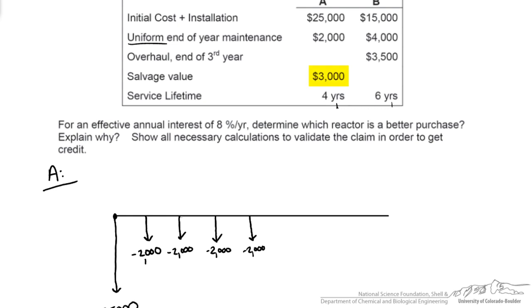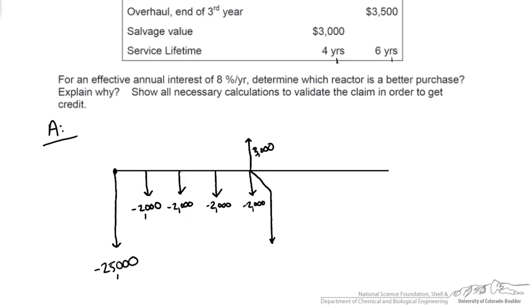There's no overhaul, but there is a salvage value. So at the end of year four, we can get $3,000 back from this piece of equipment. Also at the end of year four, we would have to buy a new reactor. So this would start our new four year cycle.